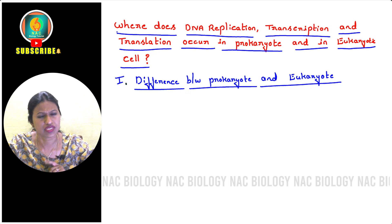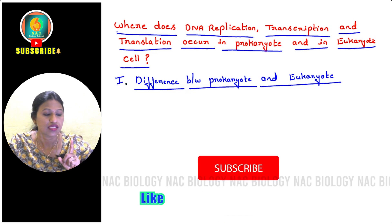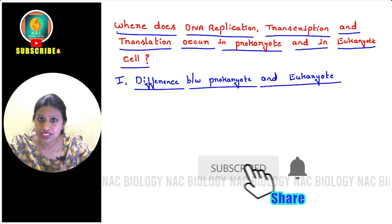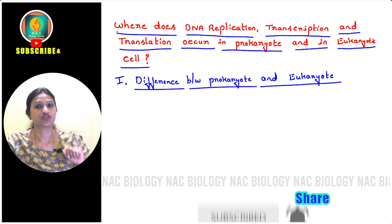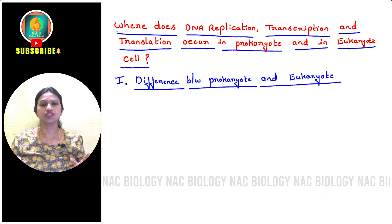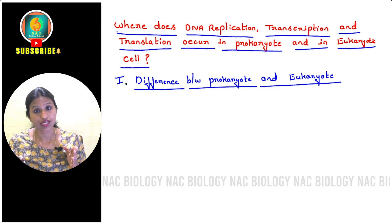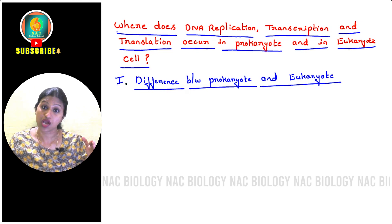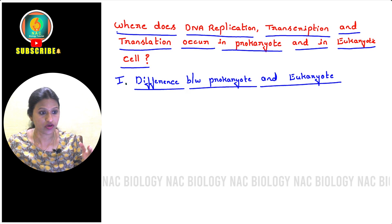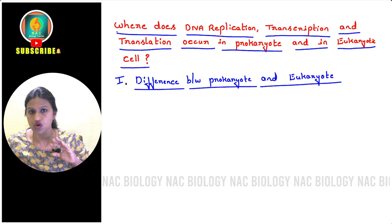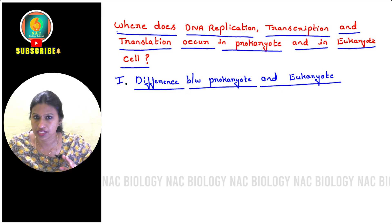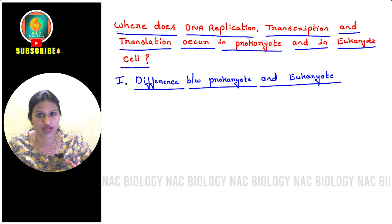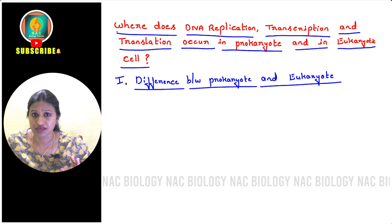The first basic thing we need to understand — many students have confusion about the difference between prokaryotic cell and eukaryotic cell. Many students do not actually know which cell is considered prokaryotic or which organism is considered a prokaryote versus a eukaryote. You have already learned biological classification in class 11th, where we studied the five kingdom classification.